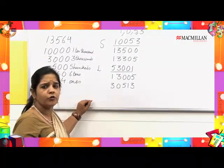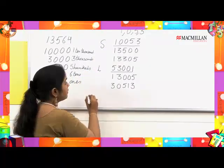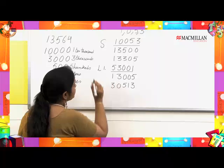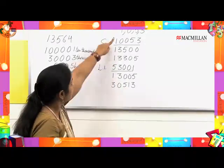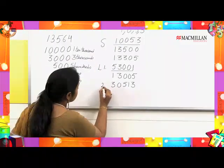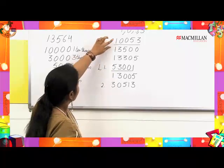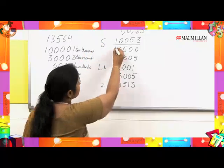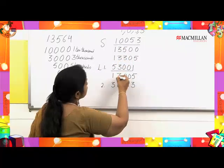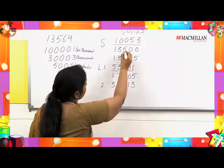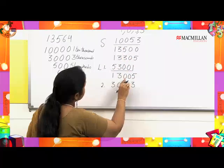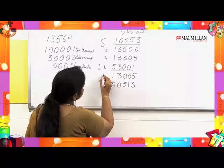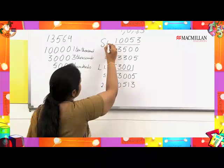Now let us arrange all the numbers in order. The largest number takes first position. For second position we again compare the 10,000 positions. After assigning the smallest to last place, for the remaining three numbers — their 10,000 and 1,000 positions are the same, so we compare their 100 position. One has 5, one has 3, and one has 0, giving us the third, fourth, and fifth positions clearly.